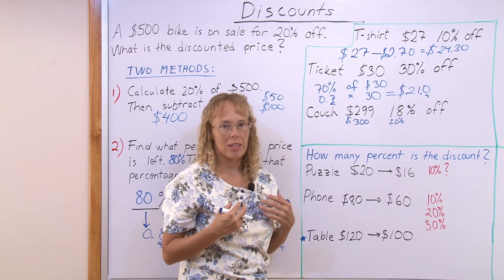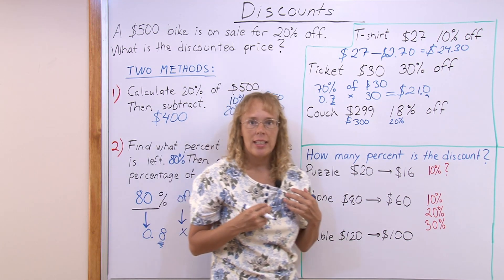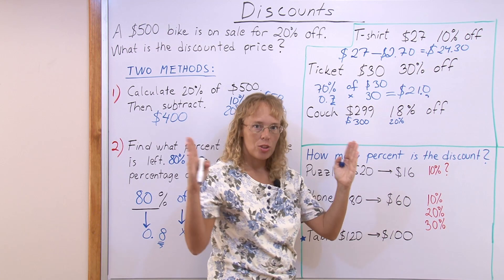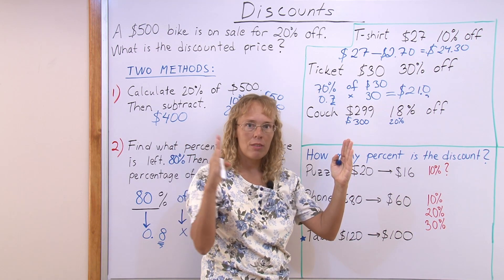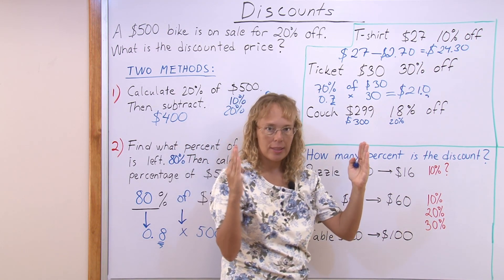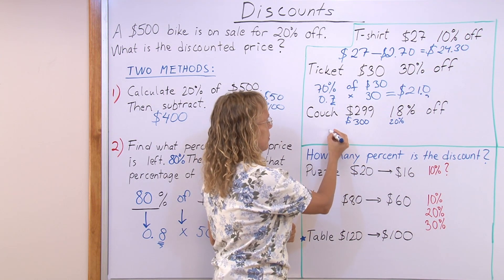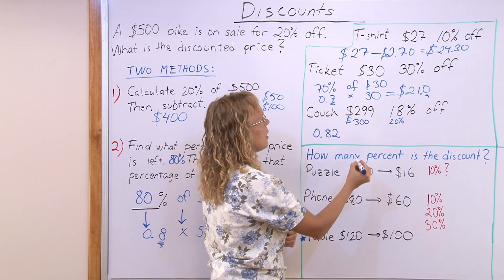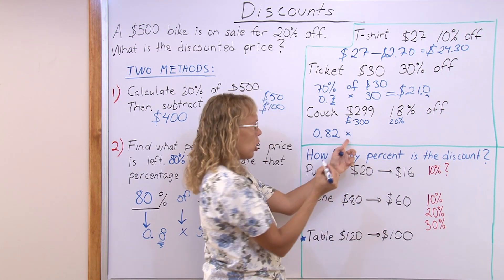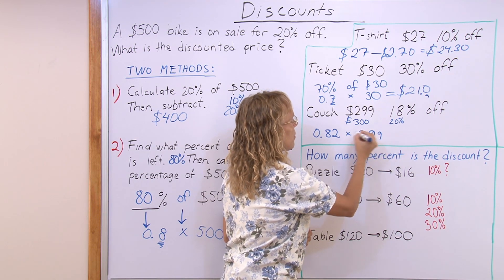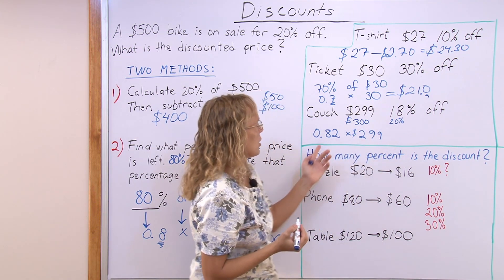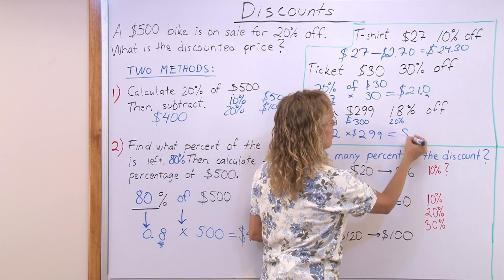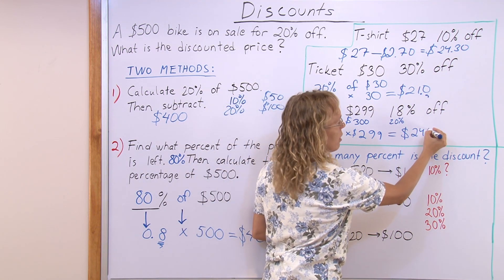But let's do it exactly. To find the exact answer, I'll use method two again. If 18% of the total 100% is taken off, then what is left is 82% of the price. 82% as a decimal is 0.82, then times $299. You calculate this with a calculator or paper and pencil, and the result is $245.18.